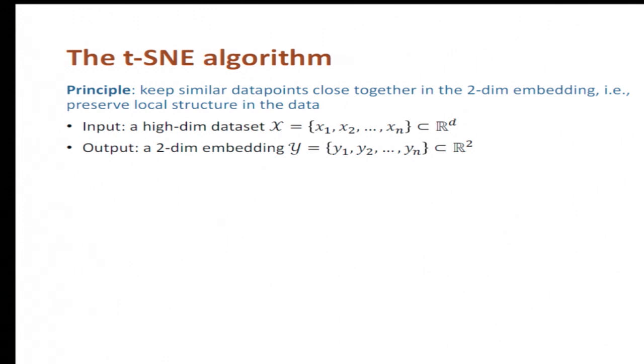Just to set up some notation, we assume that the input is a high-dimensional dataset containing n points, X1, X2, up to Xn in R^d. And the output is a two-dimensional embedding in which Yi is a point in R^2, which is supposed to be a representation of Xi.